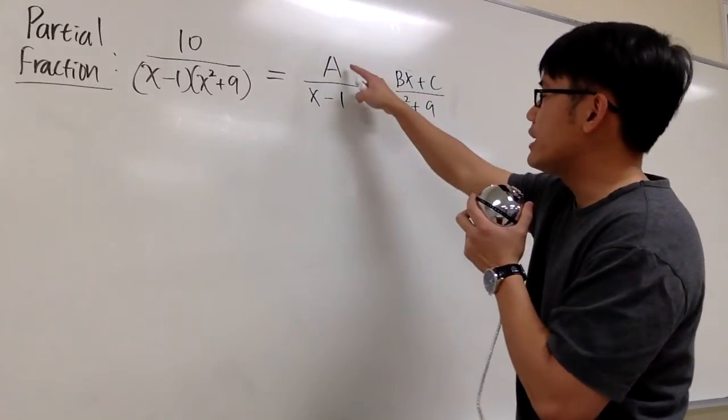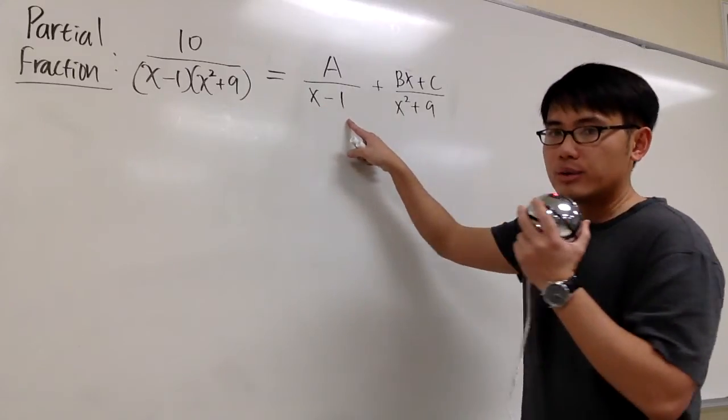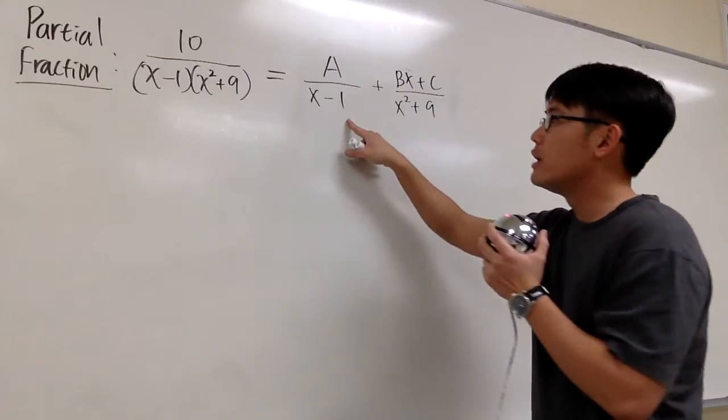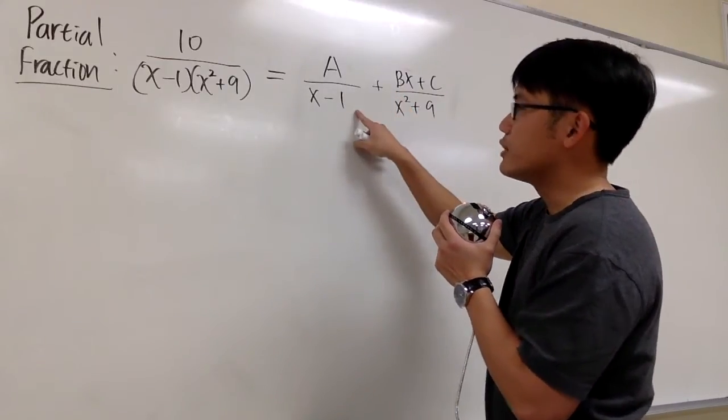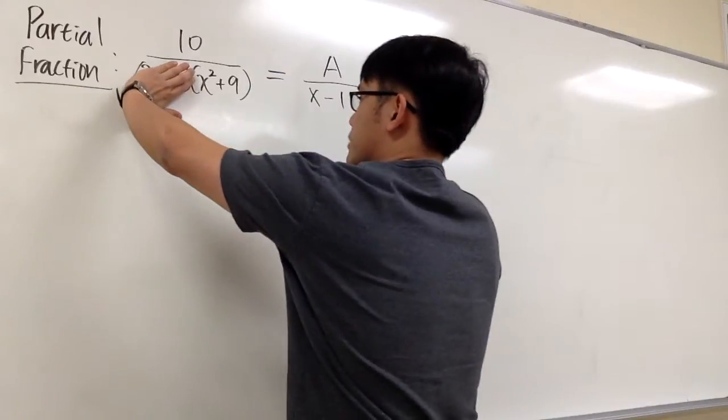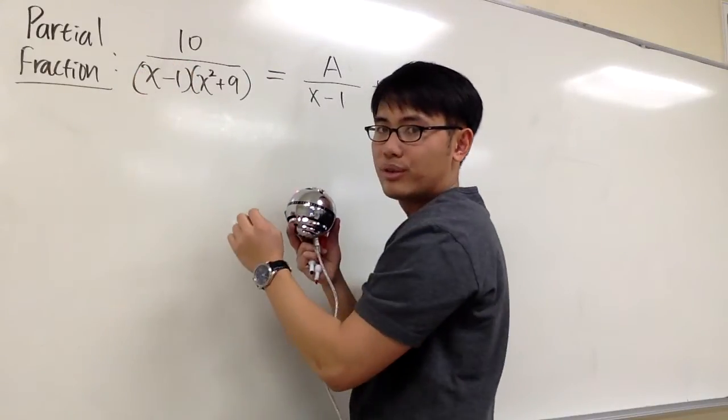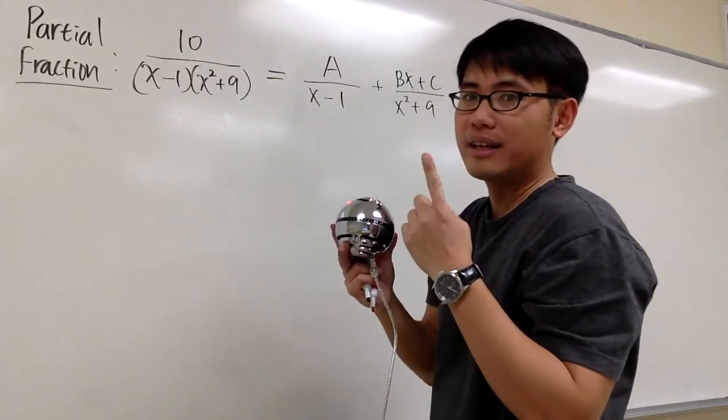Anyways, you see that here we have A over a linear factor, x - 1. I can use cover-up for A right away. Let's do that. So to solve for A, I can just look at the original expression, and then cover up the x - 1, and ask myself, how can I make x - 1 equal to 0? And the answer for that is, I need to plug in x is equal to 1.